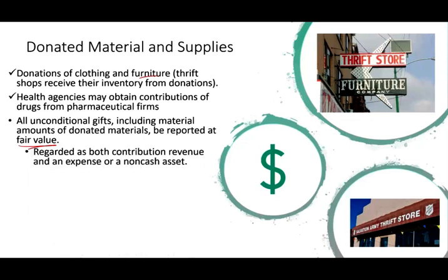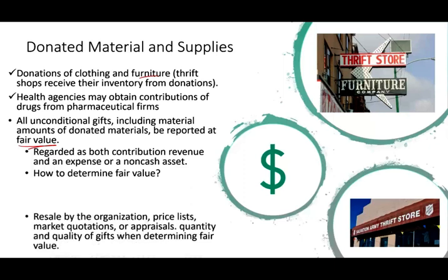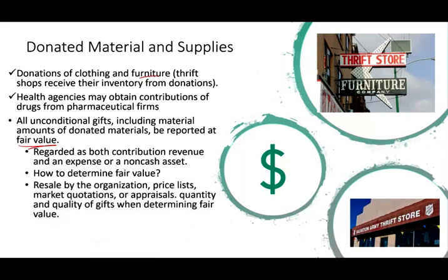It's recorded both as a contribution and as a non-cash expense. As we saw earlier, you debit an expense and credit revenue for that. We do this because we want to show how much it's costing us to run the organization. To determine fair market value, the organization can use the resale value, price list, or market quotation, taking into account the quantity and quality of the gift. Certain gifts, like used clothing, may be harder to value, but you do your best.